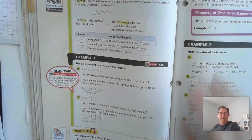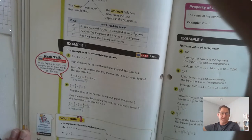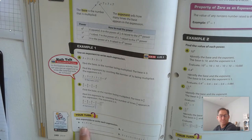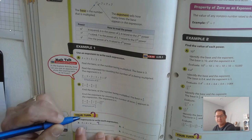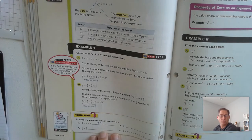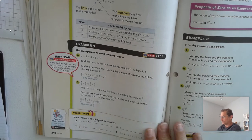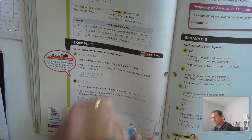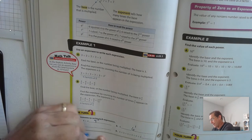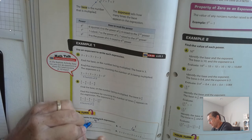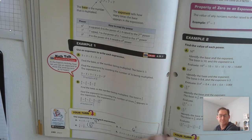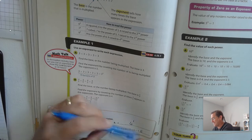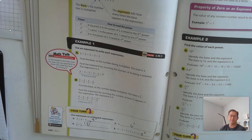On number 2, use exponents to write each expression. 4 is the base and it's repeated three times, so 4 cubed. 6 appears only one time, so that's 6 to the first power. One eighth is our base and there are 2 factors, so one eighth squared. And for number 5, the base is 5 and it's being repeated 6 times, so 5 to the sixth power.